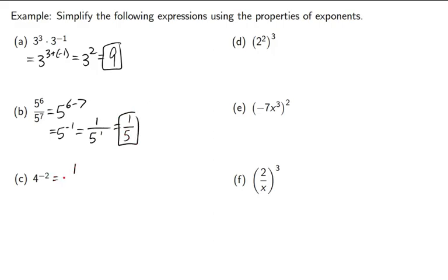4 to the negative 2, that means 1 over 4 to the positive 2, which is 1 over 16. This is the one where you multiply the powers. It's a power to a power. So, really, we get 2 to the 2 times 3. That's 2 to the 6th, which is 64.